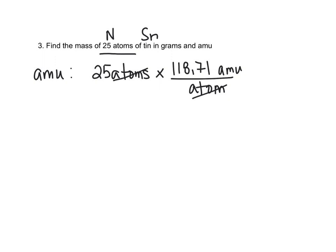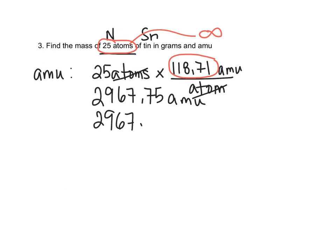So 2,967.75 AMUs. Now, significant digits. You can't have part of an atom, so you can't measure an atom in terms of quantity. The number 25 is actually a count, not a measurement, so it has an infinite number of sig figs. You cannot use the 25 to determine your number of significant digits in your final answer. You're going to have to go with your mass, so 5. You can have 5 digits in your final answer, so 2,967.8 atomic mass units.